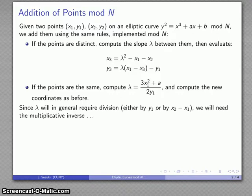Now one thing that's worth noting here is lambda in general is going to require a division, either by 2y₁ or by the difference x₂ minus x₁. And mod n, we can't divide. What we have to do is multiply using the multiplicative inverse. Now mod n, not all numbers will necessarily have a multiplicative inverse. They have to be numbers that are relatively prime to n.